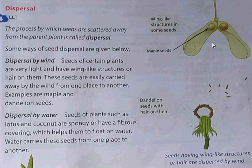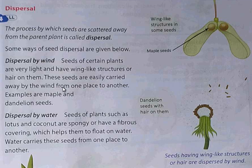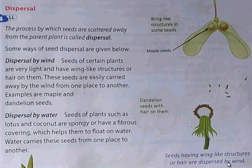This is a maple seed. You can see it has wing-like structures. Now, we will learn about dispersal by wind. Seeds of certain plants are very light and have wing-like structures or hair on them. These seeds are easily carried away by wind from one place to another. Examples are maple and dandelion seeds. This is the dandelion seed — dandelion seeds have hair on them, and when the air comes, it flies away. Seeds having wing-like structures or hair are dispersed by wind.